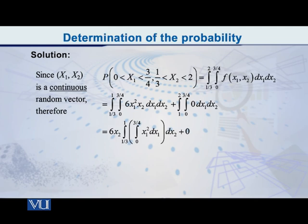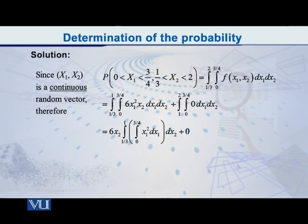The required probability is set up as a double integral. The outer integral runs from 1/3 to 2 for x2, and the inner integral runs from 0 to 3/4 for x1. We write this as a double integral with the integrand 6x1² · x2, integrating first with respect to x1 and then with respect to x2.